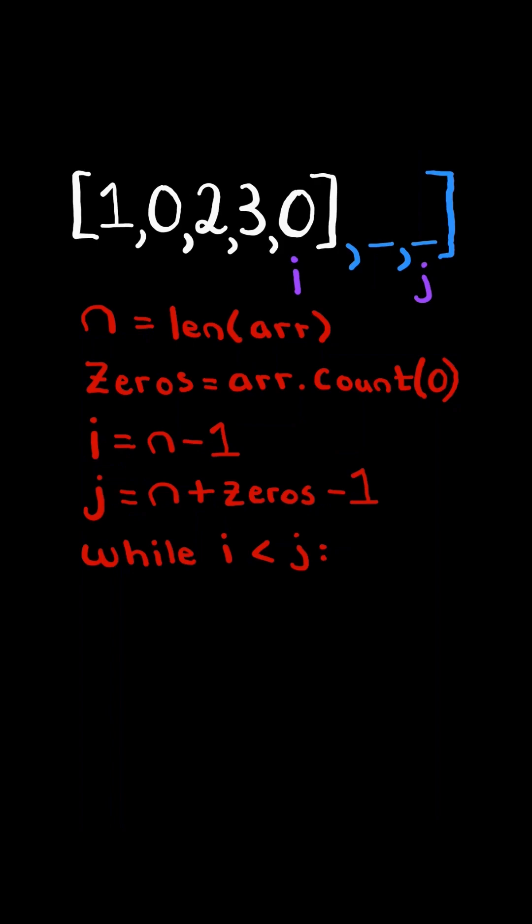And while i is less than j, if array at i equals zero, we potentially need to duplicate the zero, so we subtract j by 1. In this case, we do not have to duplicate, so at the end of the loop, we subtract i and j by 1.